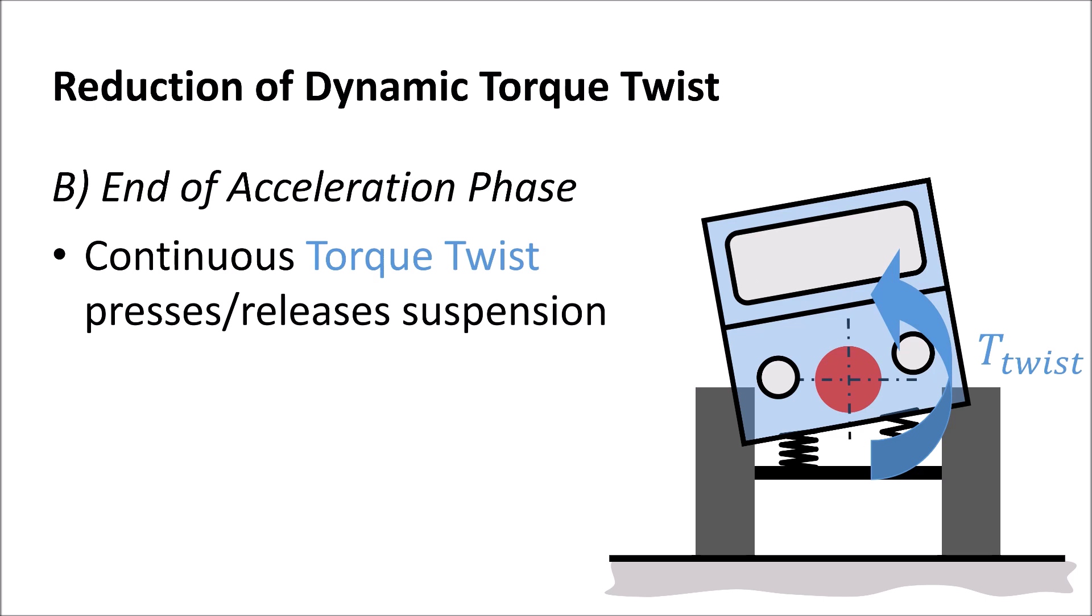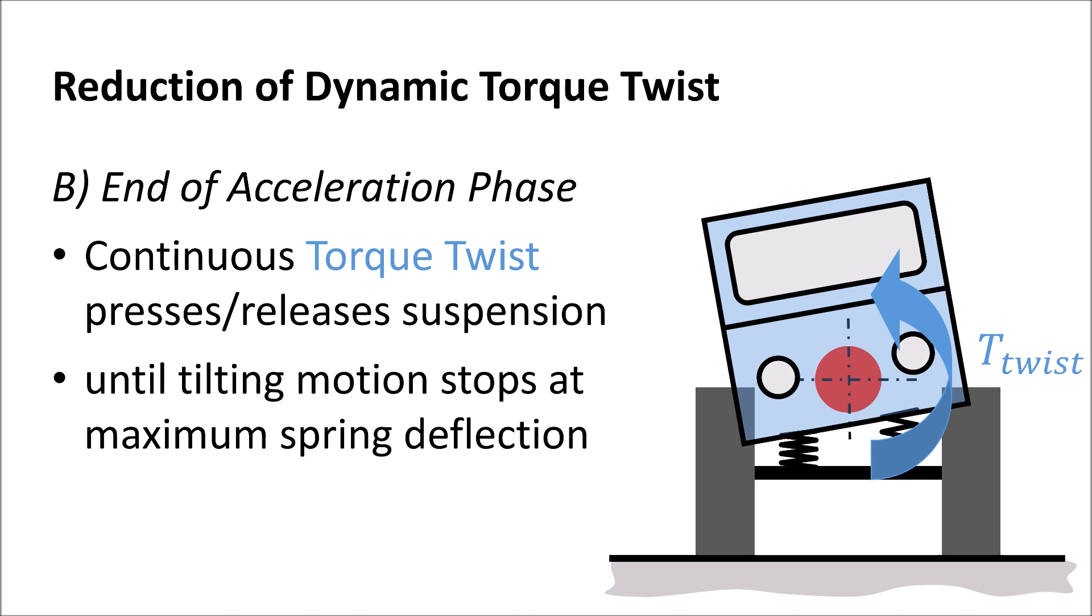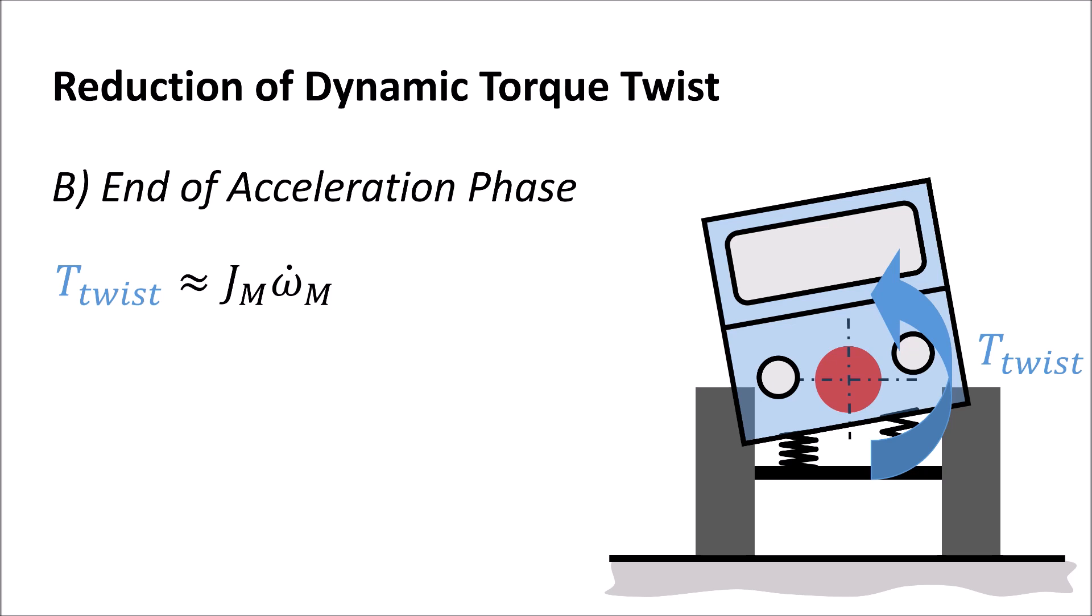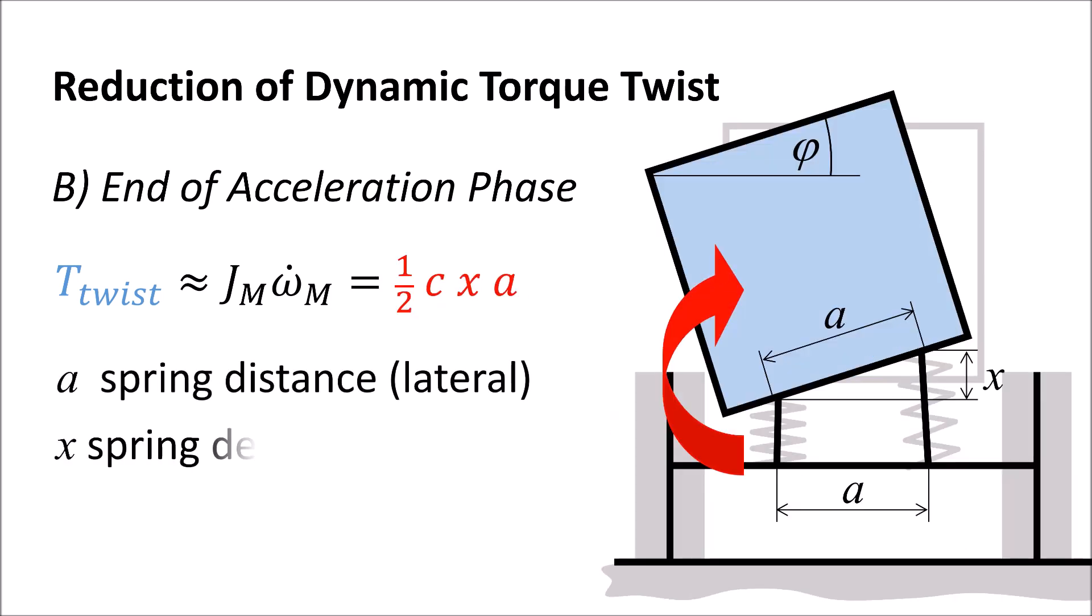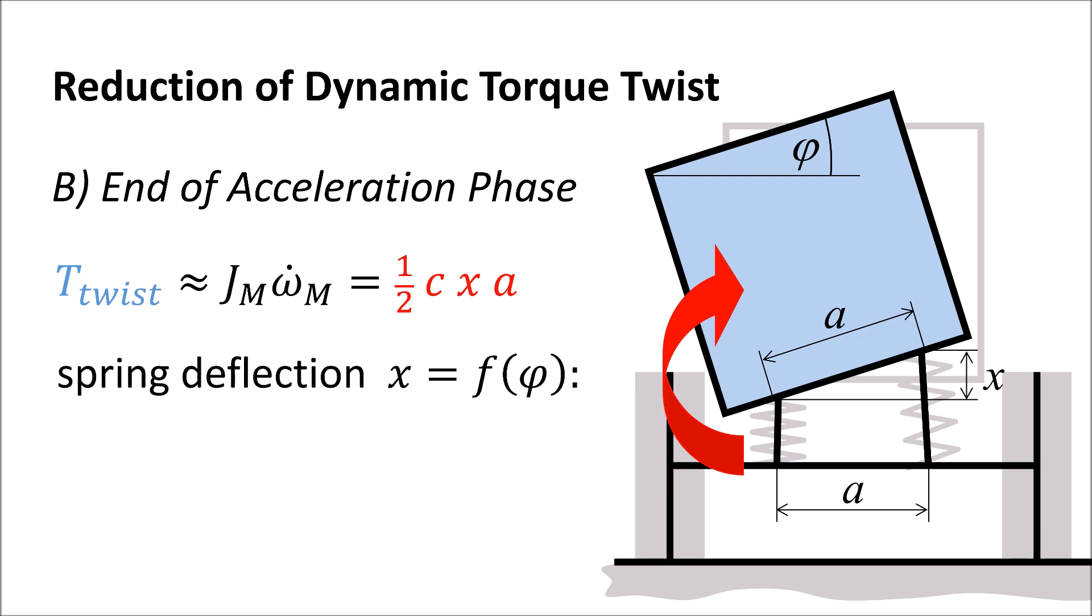The second phase B is at the end of the motor acceleration phase when the torque twist already tilted the car to its maximum angle against the forces generated by the springs. Assuming a static, stationary condition, the torque generated by the springs can be expressed as a function of spring distance, spring stiffness and spring deflection. After some transformation, we can express the tilting angle phi as a function of the relevant parameters.